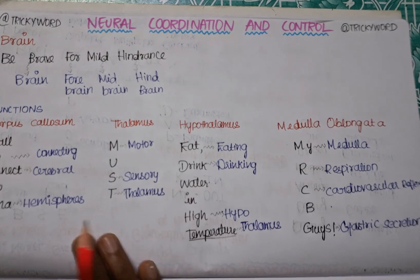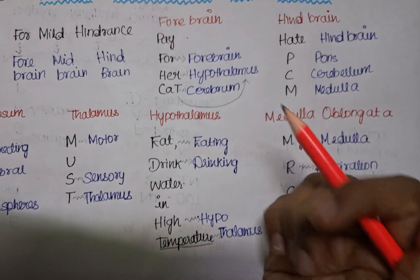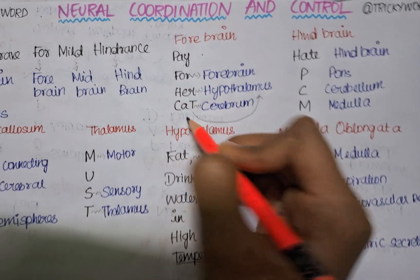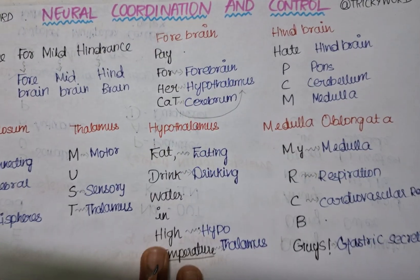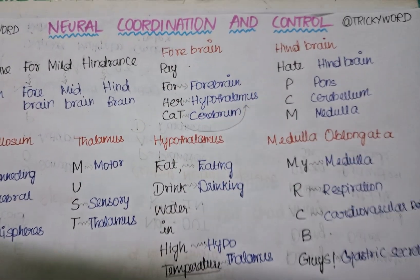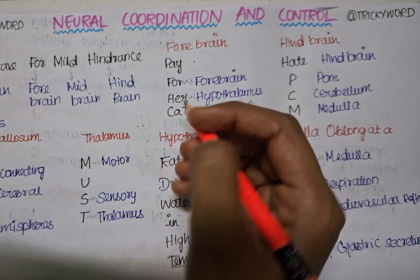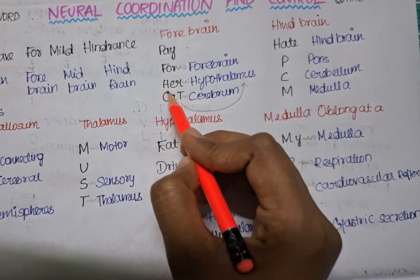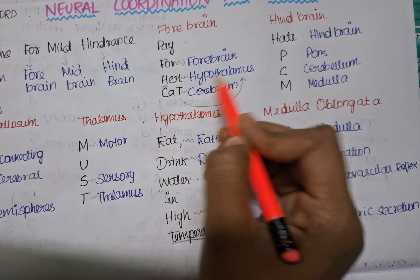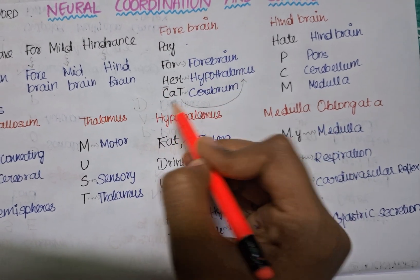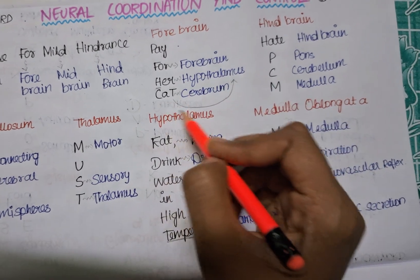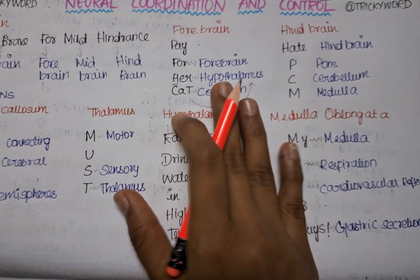For the parts of the forebrain, the trick is 'Pay for her cat' — Pay/four is for forebrain, Her/H is for hypothalamus, Cat/C is for cerebrum, T is for thalamus. Note that thalamus is already part of the hypothalamus region, so you won't forget it.